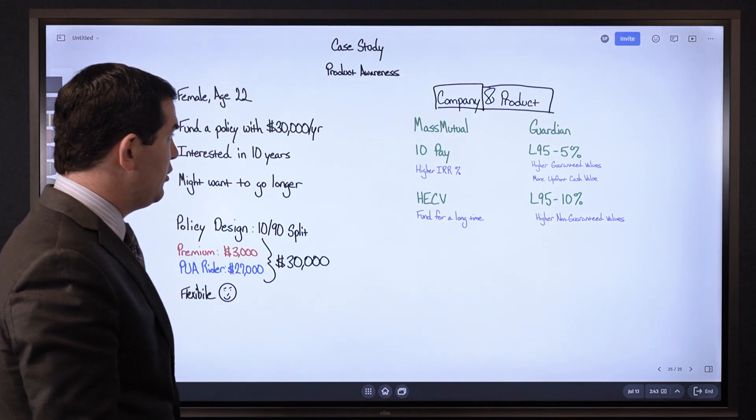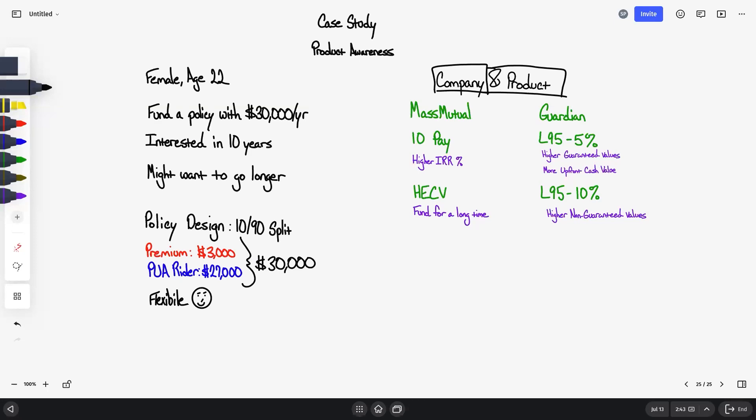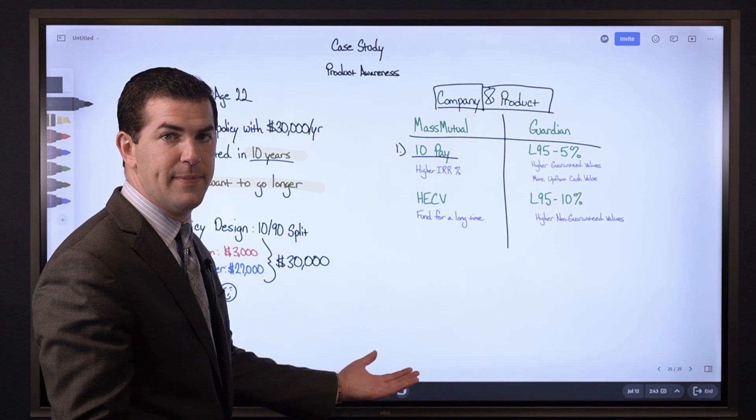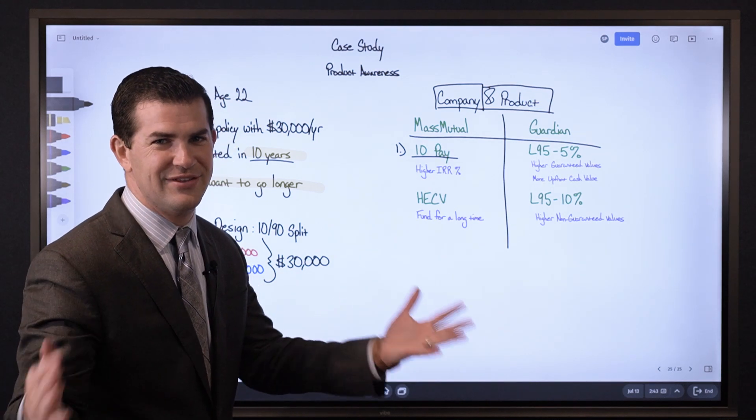The product will have an impact on this. We've got two of the four major mutual companies here, Mass and Guardian. Beginning with Mass, what we'll look at is their 10-pay policy. Her goal of funding for 10 years, how long can you pay into a 10-pay policy? How long can the base premium be paid? 10 years, it's in the name of the product.